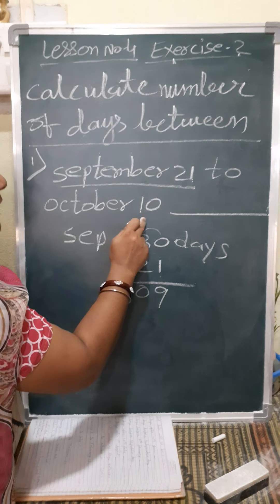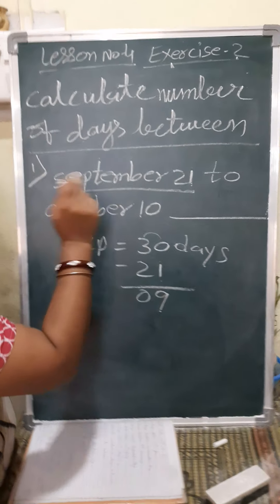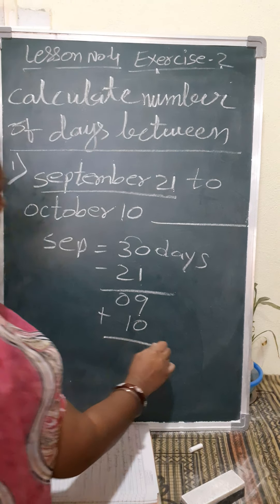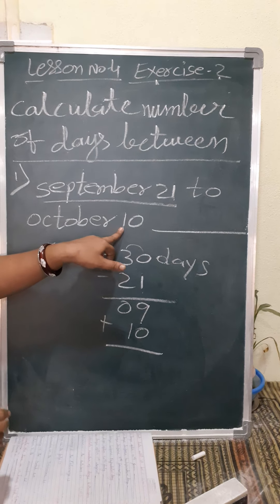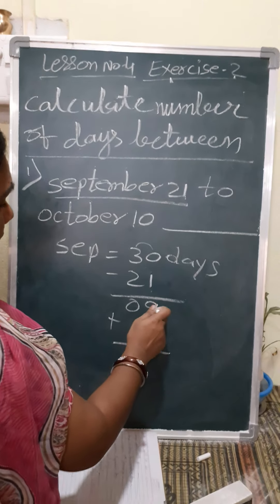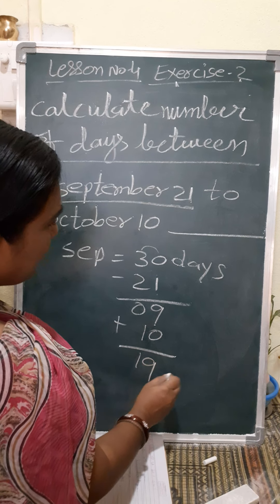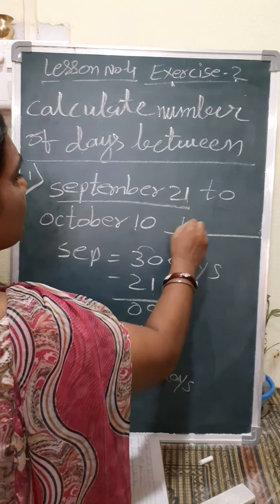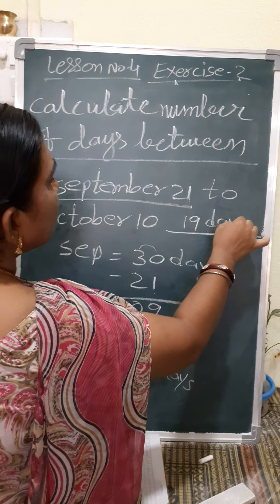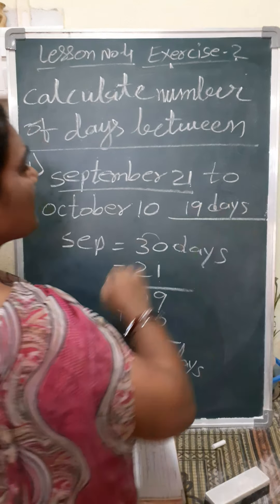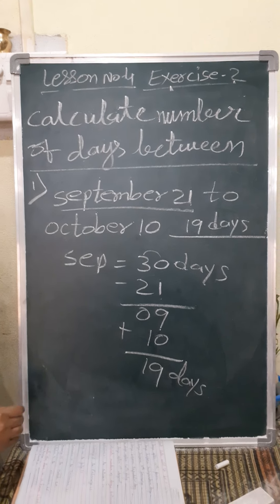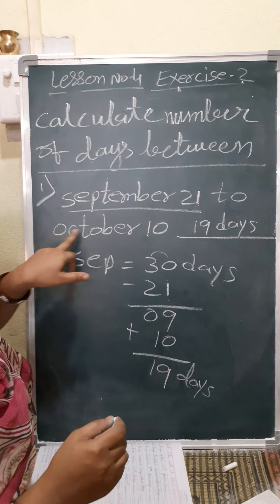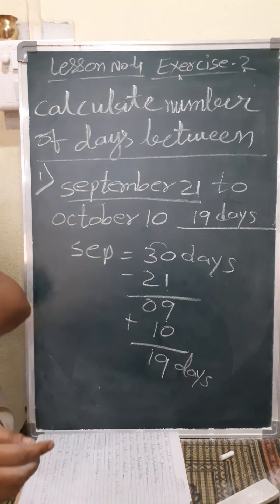These 9 days plus this 10 days — the October month 10 days — we have to add. So 10 plus 9 is 19. How many days came? 19 days. So we can write here: 19 days. Now understood — September 21 to October 10 there are 19 days.